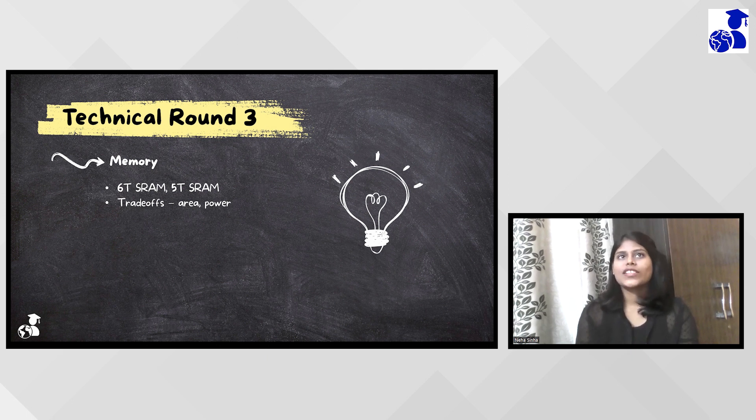Then they asked me that if it is so better, then why don't we use 5T, why use 6T? Then I explained about it that 5T is not as much stable as 6T. Then they asked me about its circuit diagram and something more about 5T and 6T, how it works and read and write operation and other things. Everything about this SRAM.